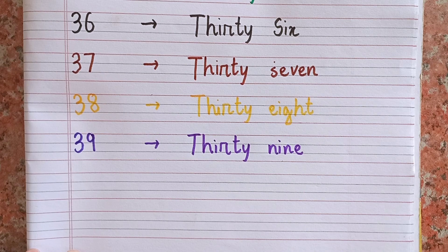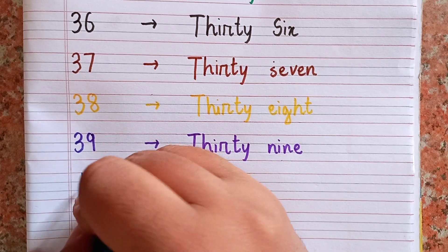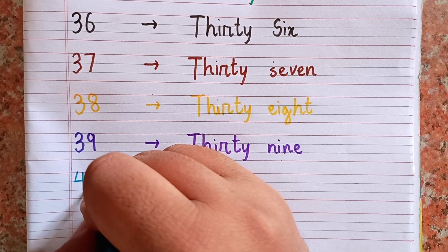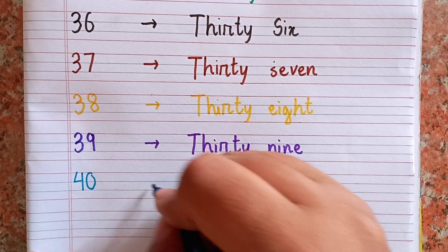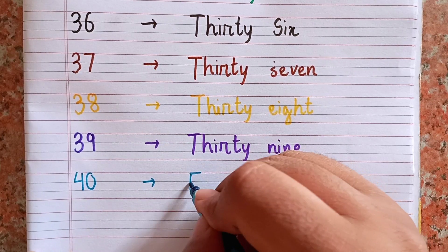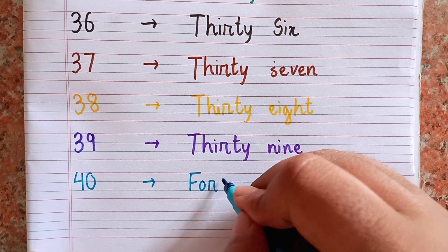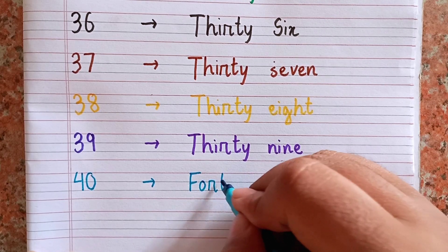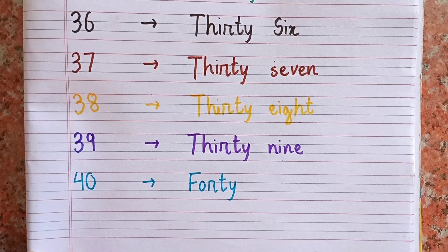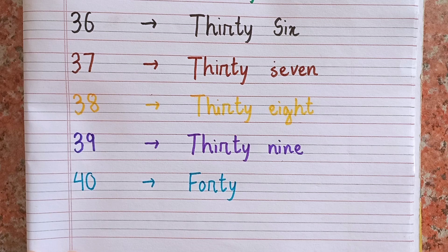The spelling of thirty-nine is — 3-9. After thirty-nine, the next number is forty — 4-0. The spelling of forty is F-O-R-T-Y. 40.